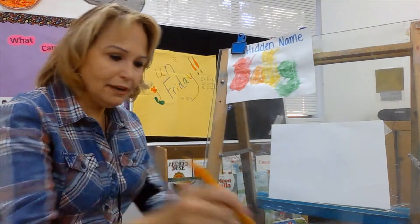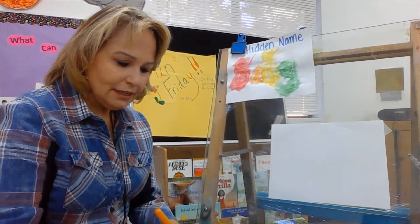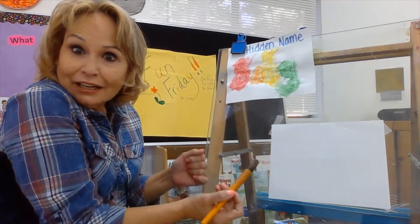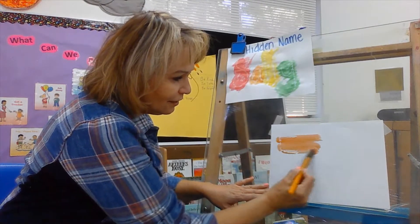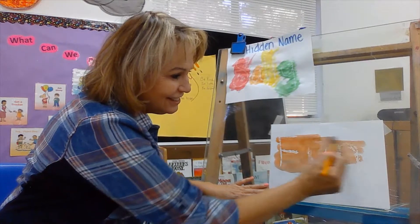And then you're going to get your paintbrush. Dab a little bit of water. Put it in the paint. Let's see what I wrote. Do you see any shapes or letters? What do you see here? Do you see it, boys and girls?